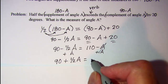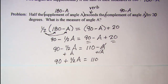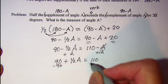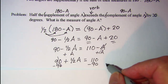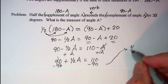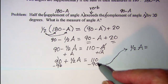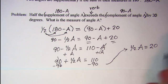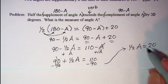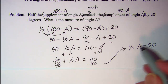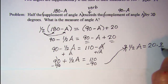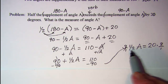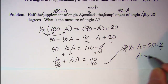On the right side I have 110. Let's subtract 90 from both sides. This cancels and I have one half A on the left side equals 20 on the right side. Now to get rid of my one half, I'm going to multiply both sides by the reciprocal. The reciprocal of one half is two over one. These will cancel and I have A is equal to 40.